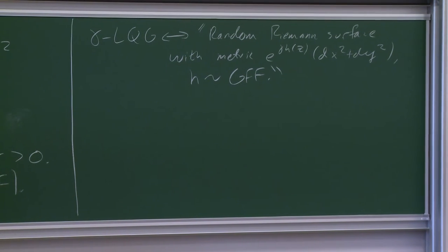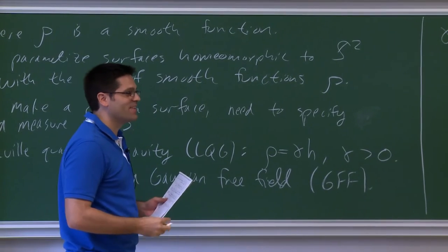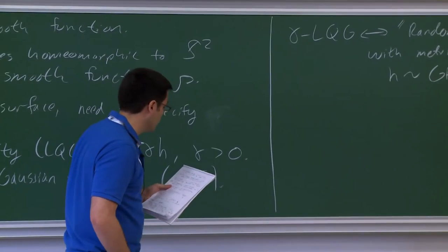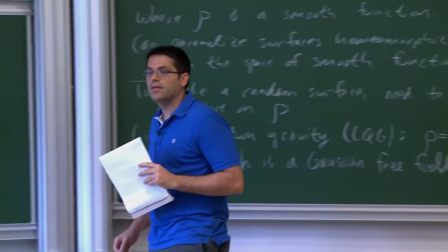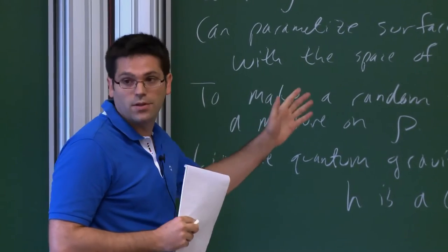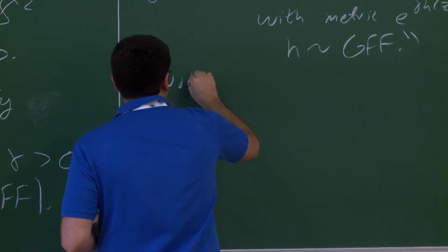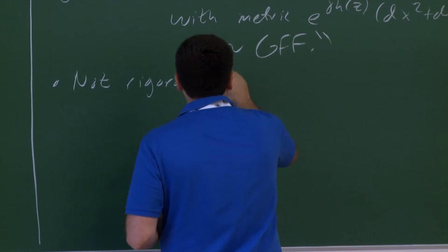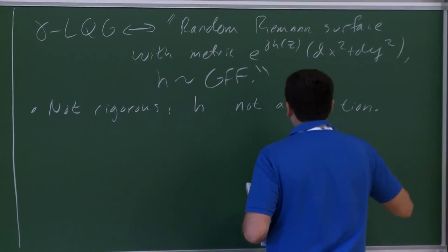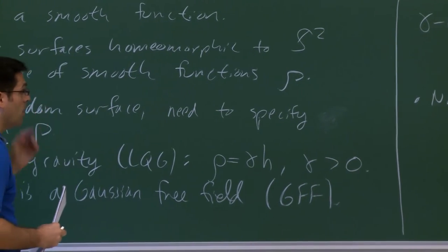There's an important caveat: ρ had to be a smooth function in the classical setting, but now we're putting a measure on things which are not even functions. The Gaussian free field h is not a smooth function — it's not even an L² function, it's a distribution-valued object. So it's going to require some interpretation to make sense of what this actually means. This construction is not rigorous as stated, because the metric e^{γh} only makes sense after regularization.